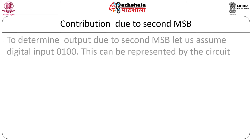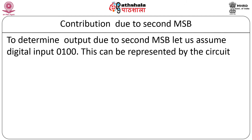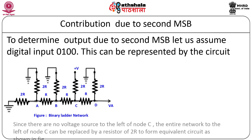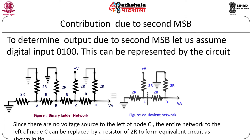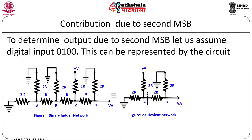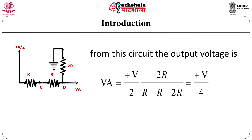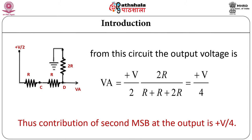To determine the output due to the second MSB, assume digital input is 0100. From the circuit, to the left of node C there is no voltage source, so the entire network to the left of node C is replaced by a single resistor of 2R. From the final equivalent circuit, the output voltage VA comes out to be +V/4. Thus the contribution of the second MSB at the output is +V/4 in the binary ladder network.